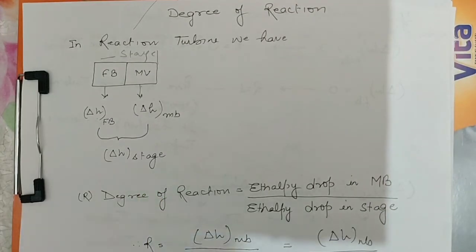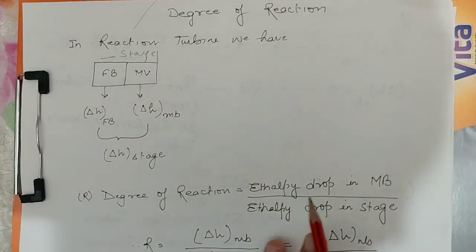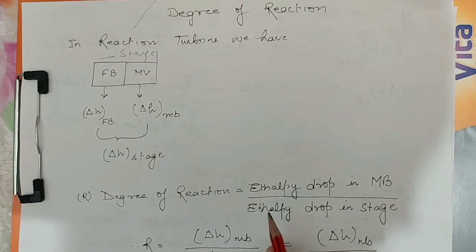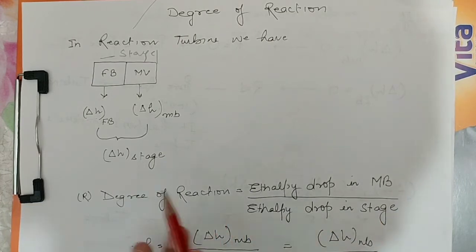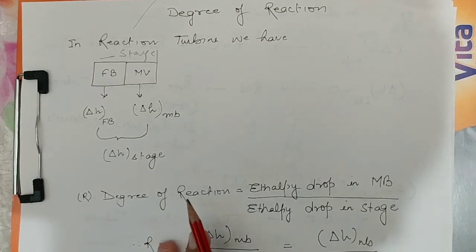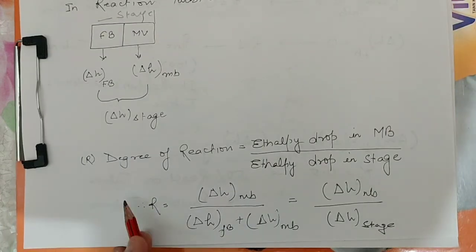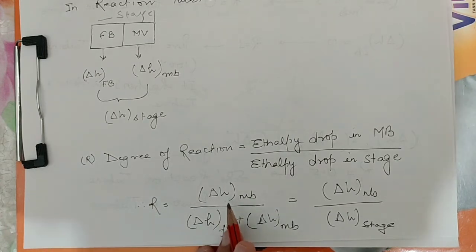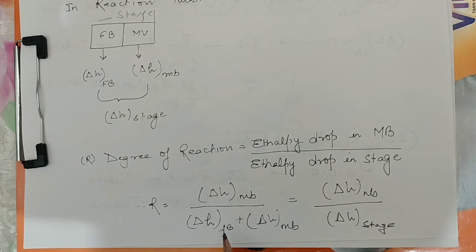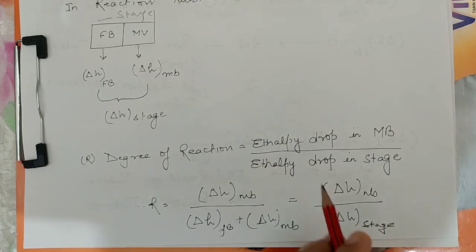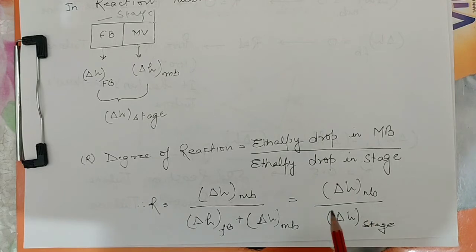There is a term which defines how much percentage of enthalpy drop takes place in the moving blade with respect to the total enthalpy drop in the stage. That term is called the degree of reaction. Degree of reaction is the ratio between the enthalpy drop in the moving blade to the enthalpy drop in one stage. It is represented by capital R: R = delta H_mb divided by the summation of enthalpy drop in fixed blade and moving blade, i.e., the total enthalpy drop in the stage.